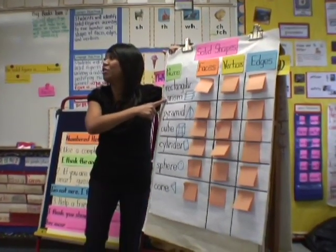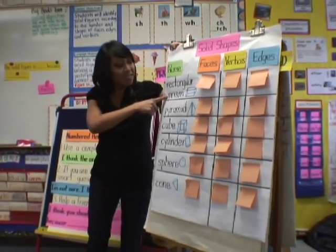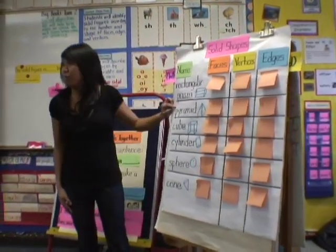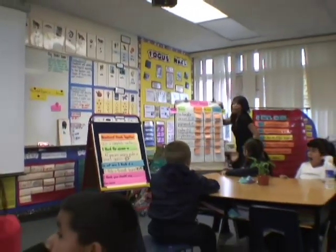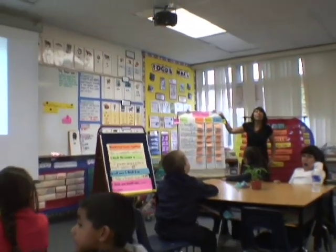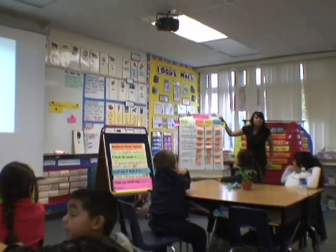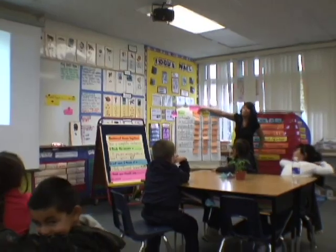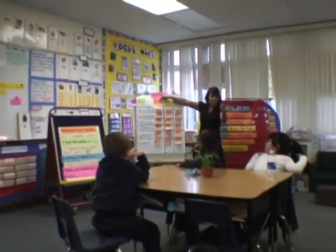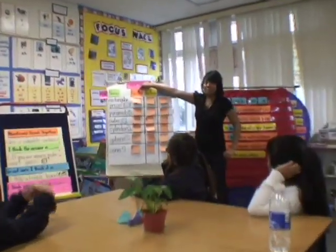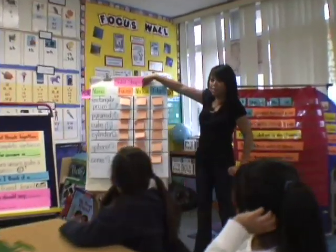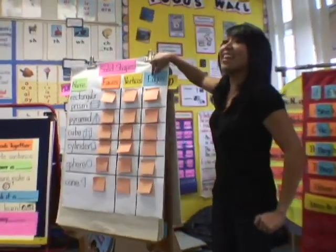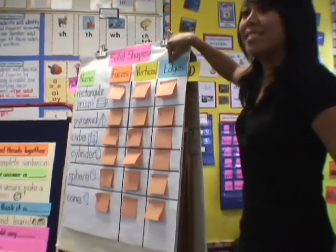Rectangular prism. Your turn. Rectangular prism. Pyramid. We can describe these shapes by looking at their specific attributes: the number of faces, vertices, and edges.